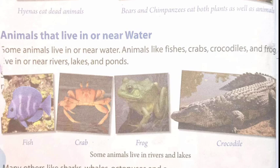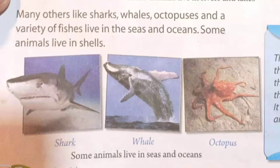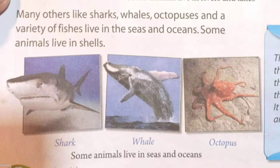Many others like sharks, whales, octopuses and a variety of fishes live in the seas and oceans. Pictures are given of shark, whale and octopus — these animals live in seas and oceans.